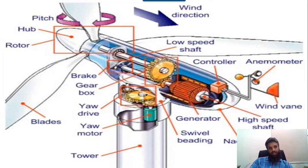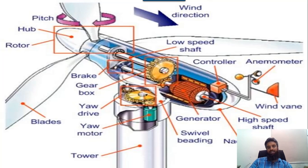The rotor consists of the hub and the blades. The angle of the blades is called the pitch. From the blade there is a shaft — the low speed shaft — which is dependent on the speed of the blades. From that shaft there is a gear mechanism, where the upper side is attached to the low speed shaft and the lower side is attached to the high speed shaft. The high speed shaft speed is decided based on the frequency we want to generate. There is a generator which is basically a permanent magnet generator; when the coil moves within the permanent magnet, it produces electricity.